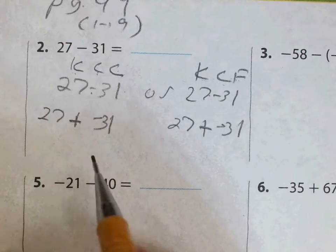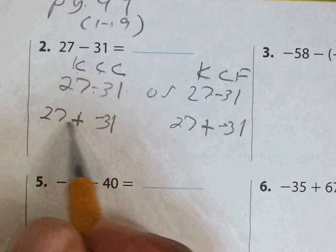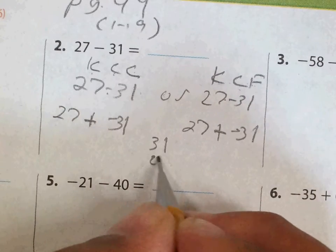And now you follow the rules of addition where the rules of addition say same sign add, different signs subtract. There are different signs, so 31 minus 27.